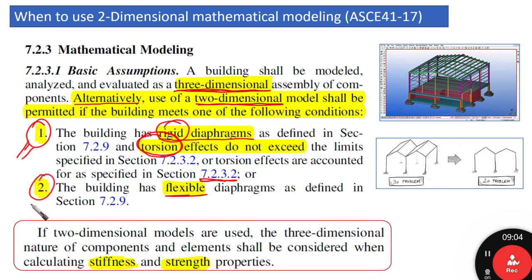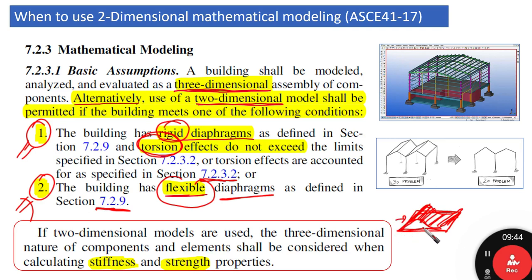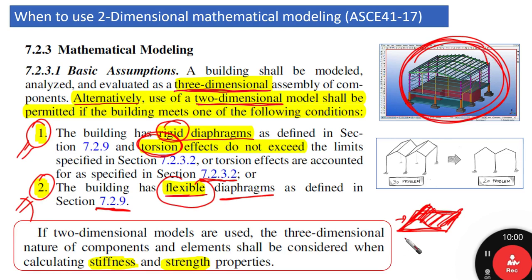The second condition is that the building has flexible diaphragms as defined in section 7.2.9. A flexible diaphragm does not provide enough rigidity to transfer forces from one lateral element to another. In this case, you are permitted to use 2D modeling.